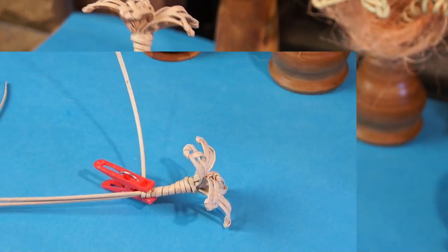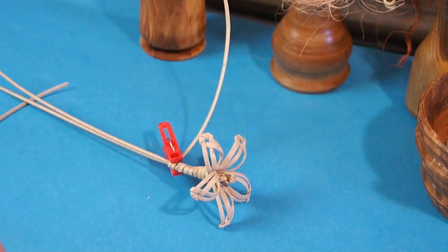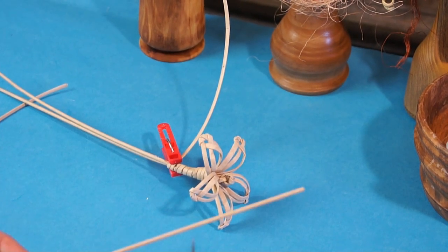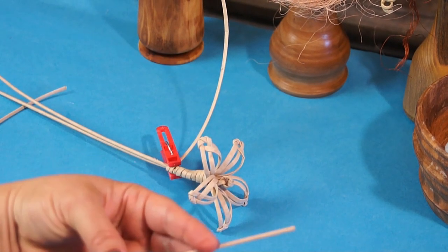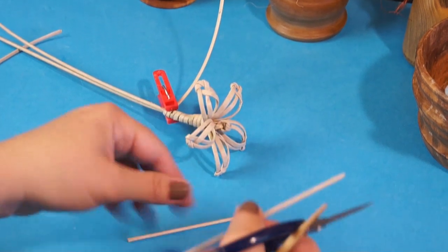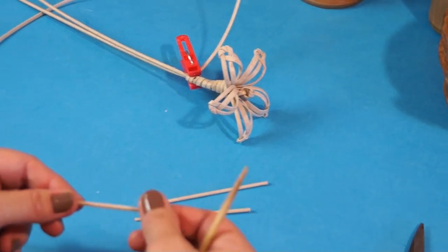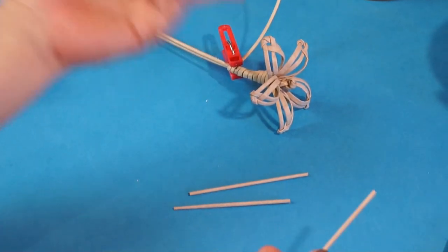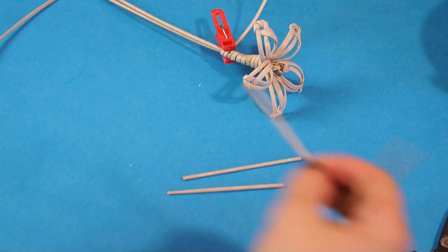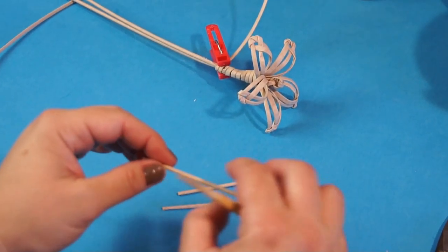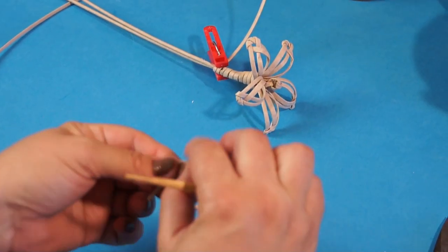The flower would be incomplete without leaves. It is where you can improvise. I take one more tube, cut it into three parts. Well, you can make a leaf in the same way as a petal. But I'd like to introduce some improvisation and make a carnation-like leaf.